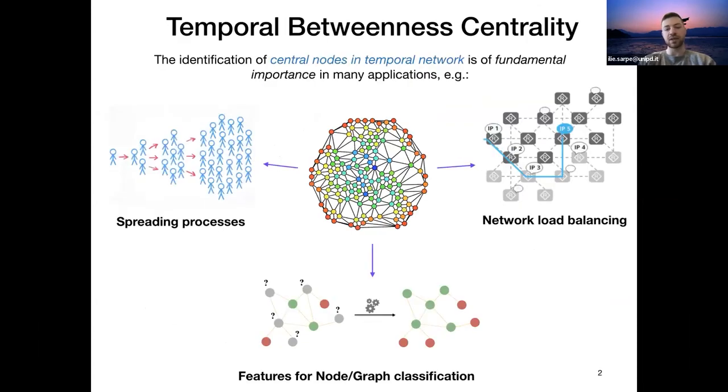So by defining novel primitives on such type of data, we are able to gain novel insights about our domains. One of the most important primitives is the study of central nodes in temporal networks, and in particular, the temporal betweenness centrality. In addition to the applications that we have for standard networks, temporal networks allow us to better study spreading processes with respect to the evolution time, or the balancing of IP networks with respect to the time when the balancing happens, and for graph node classification in temporal networks.